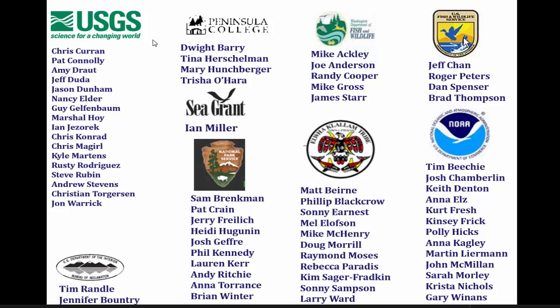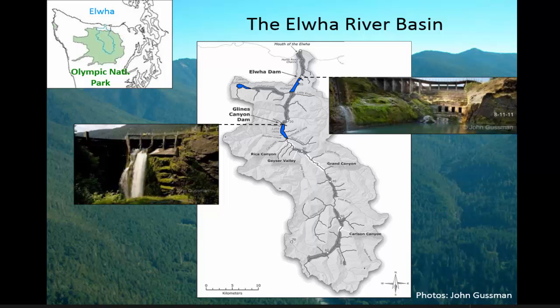One of the things about the Elwha Dam removal is that there are a lot of different groups involved, and this is just a smattering of the people working on it. It's a large process involving a lot of money over a long period of time. This is the Elwha Dam right here. The majority of it is in Olympic National Park, and there were two dams built in the early 1900s. The Elwha Dam is the lower dam, and the Glines Canyon Dam is further upstream.